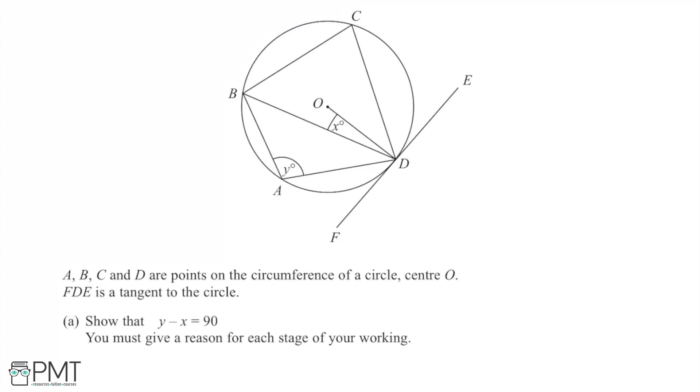Here we have a diagram where A, B, C and D are all points on the circumference of a circle which has a centre at O, and we can see that in the diagram. So the centre here of O and the points A, B, C and D on the circumference of this circle.